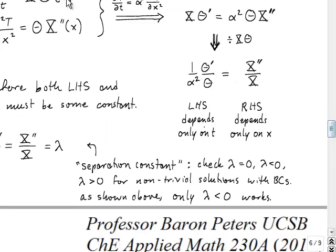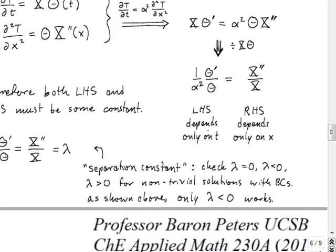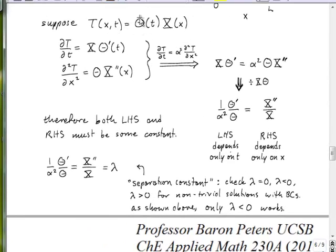Okay, so in separation of variables, we're going to assume that the full solution T of x and t can be written as a product of one function that depends only on time and another function that depends only on x. And now, writing down what the partial derivatives of T are, we have X. So with differentiating with respect to t, we have X times theta prime. And differentiating with respect to x twice, we have theta times X double prime.